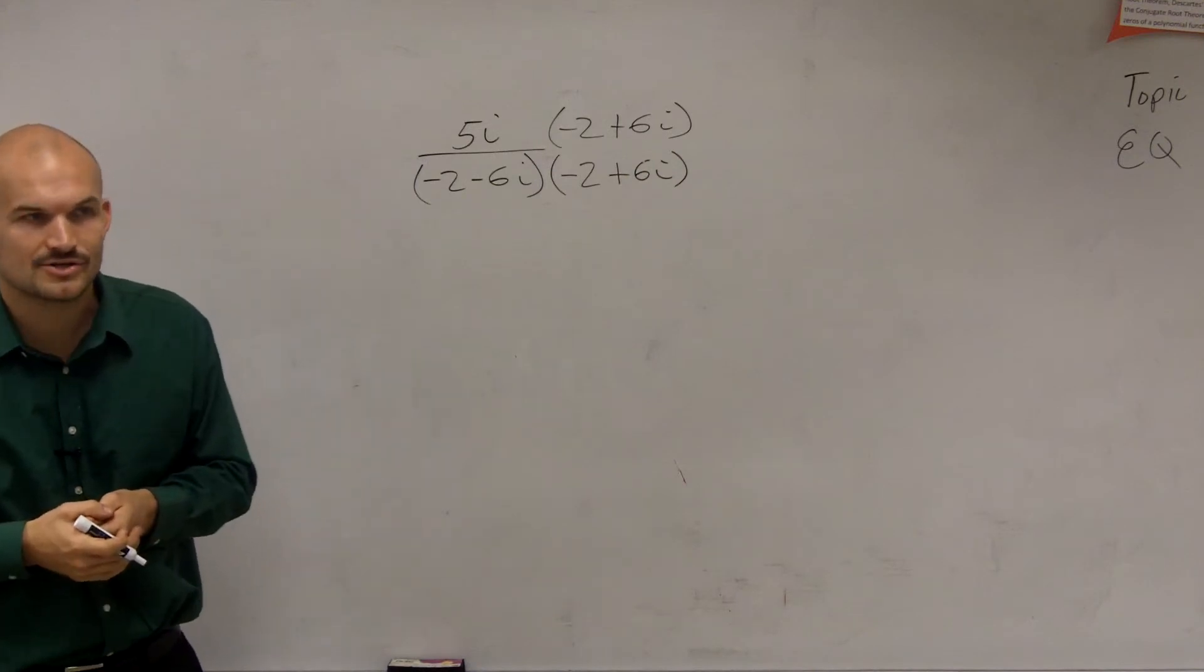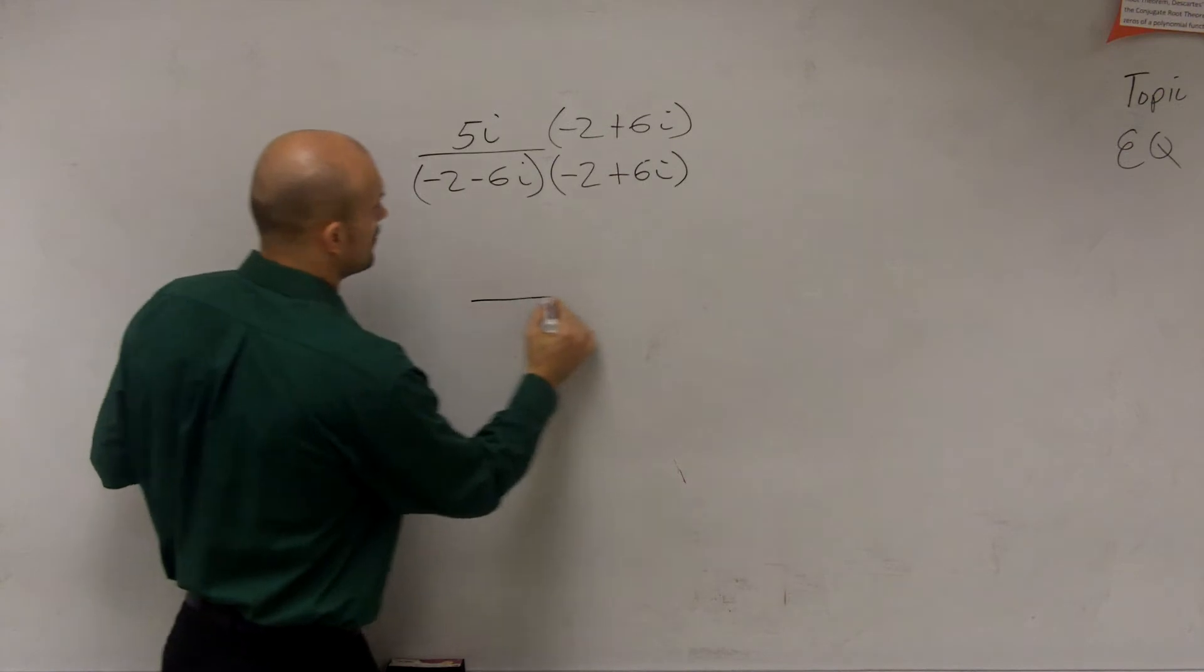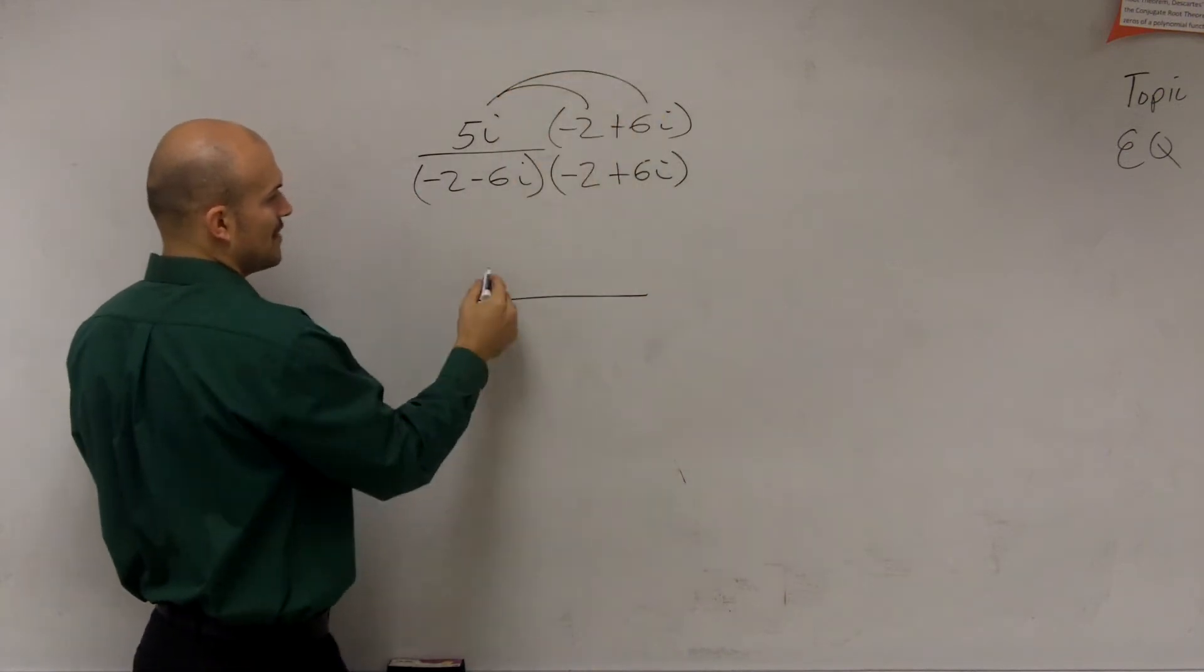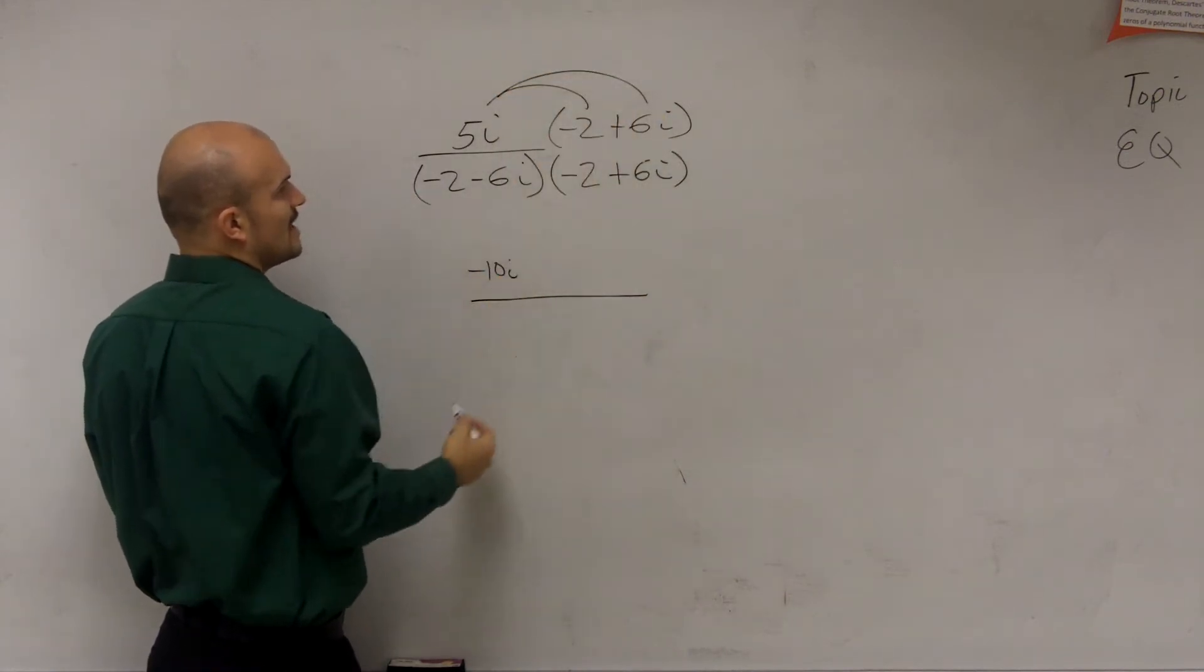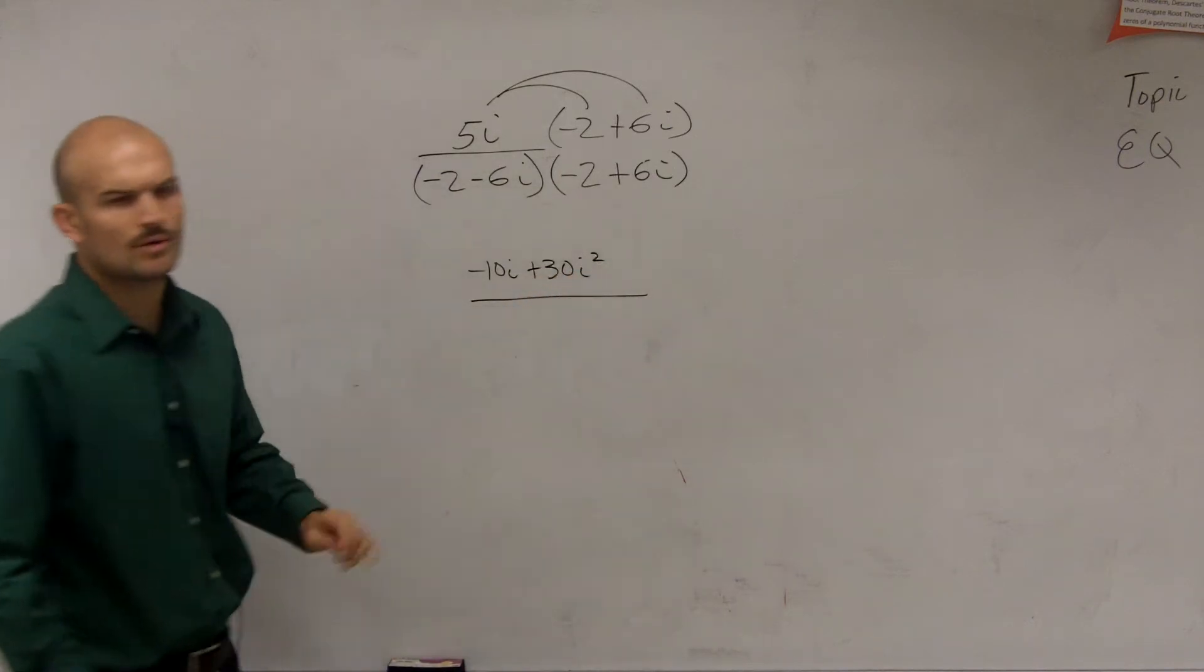Now, why do we want to multiply by the conjugate? So let's take a look at what happens when we multiply by the conjugate. Well, first of all, this one's pretty easy. We're just going to do the distributive property, right? So we have negative 10i plus 30i squared. And we'll reduce that in a second.